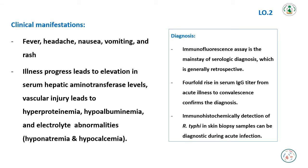Vascular injury leads to hyperproteinemia, hypoalbuminemia, and electrolyte abnormalities such as hyponatremia and hypocalcemia. The diagnosis through immunofluorescent assay is the mainstay of serological diagnosis, which is generally retrospective. A 4-fold rise in serum IgG titer from acute illness to convalescence confirms the diagnosis.